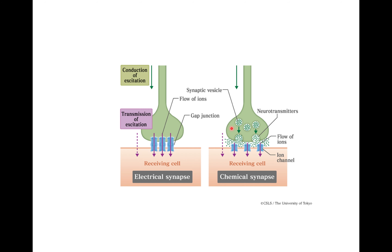In chemical synapse there is release of neurotransmitters, while electrical synapse uses gap junctions. Thank you.